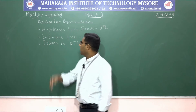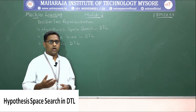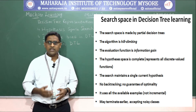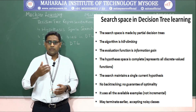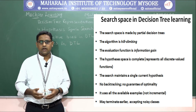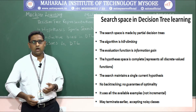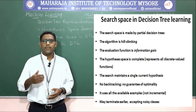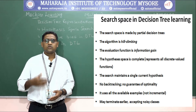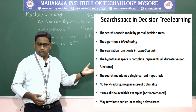The hypothesis space search in decision tree learning uses a search space made up of a partial decision tree where the algorithm is hill climbing. There are two approaches: top-down and bottom-up. The algorithm will be hill climbing whenever leaf nodes are split into sub-branches or sub-trees. The evaluation function used is information gain.